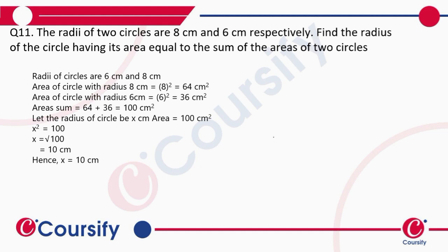So we have to find the radius of the circle whose area is equal to the sum of the areas given in the first statement. In the first statement, they have given us two circles with radii 8 centimeters and 6 centimeters.